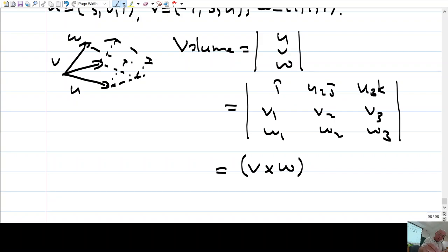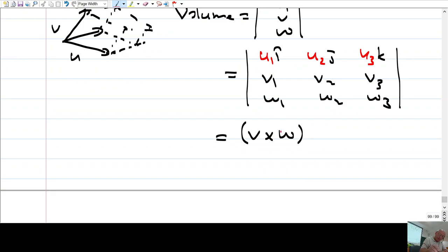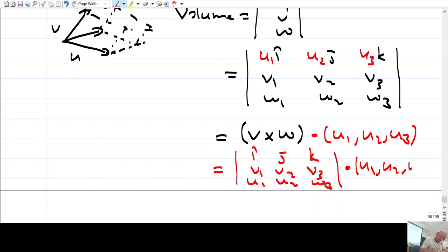Bu, u dot product with v cross w olacaktı. Ama i, j, k yerine şunlar olacaktı: u1 times i, u2 times j, u3 times k. Yani, this determinant is i, j, k; v1, v2, v3; w1, w2, w3 dot product with u1, u2, u3.